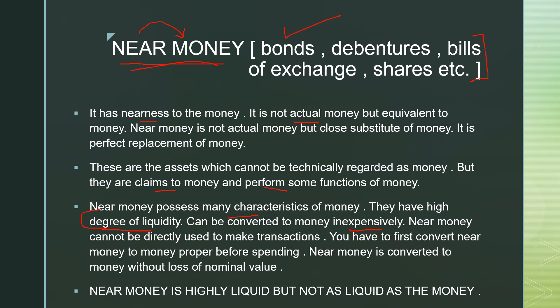Suppose you have a necklace worth 5 lakh rupees. After some time you need cash, so you go back to the jeweler. The jeweler may deduct making charges and polishing costs, paying you less than the actual amount, and it may take visiting 2–3 jewelers to get the best deal. But in the case of near money, it has a high degree of liquidity and you don't waste money converting it to money proper — it can be converted inexpensively.